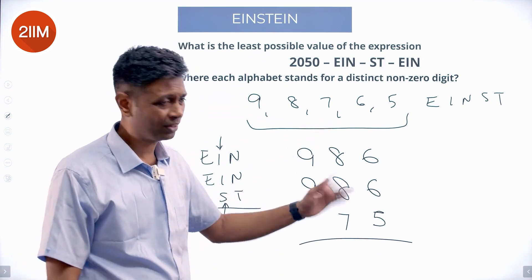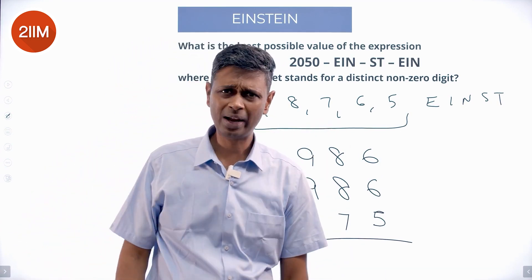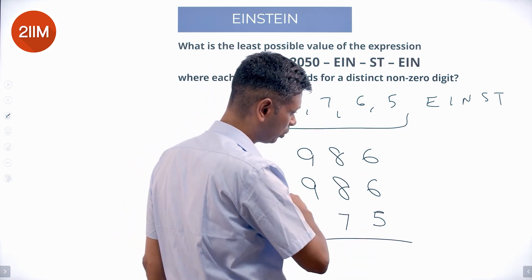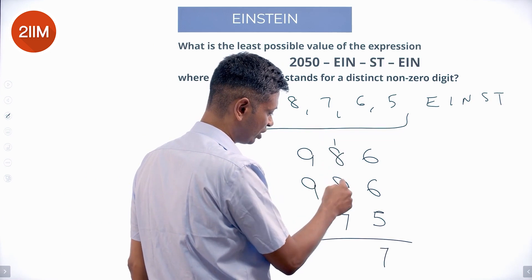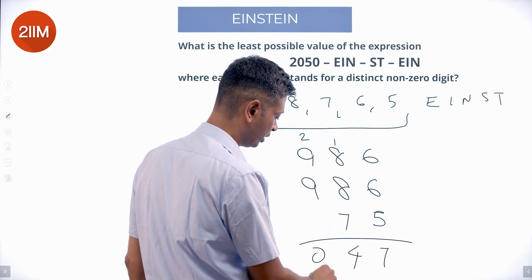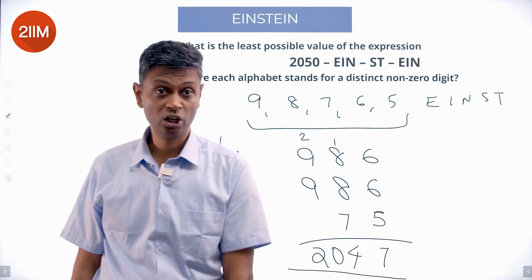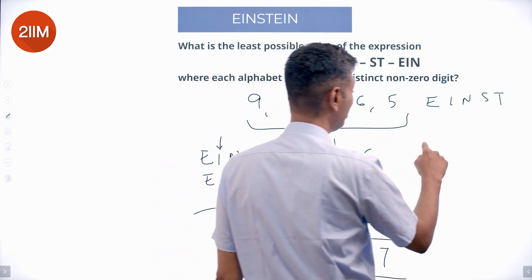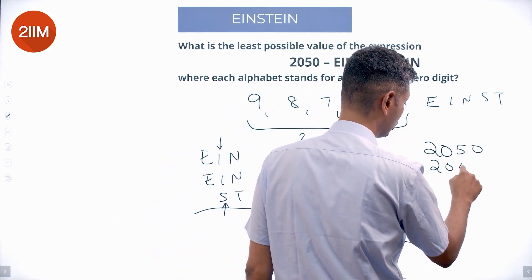I put two sixes and one five because 6 is greater than 5, so I would rather use it two times instead of one. Now I add all this up: 6 + 6 = 12, + 5 = 17, carry 1. 9 + 9 = 18, + 2 = 20, + 2 = 22, so 2047. The maximum possible sum of EIN + EIN + ST is 2047. The minimum possible result: 2050 - 2047.